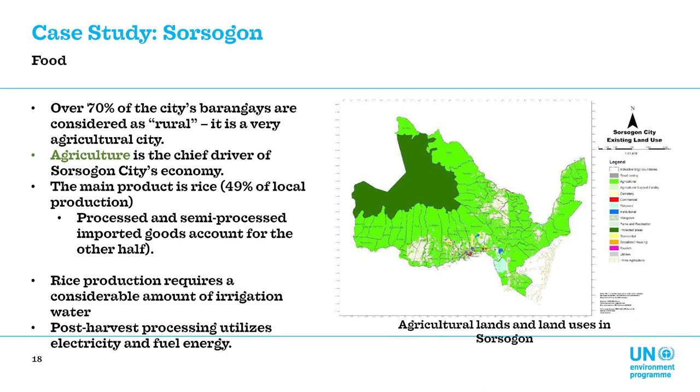The other resource flow we looked at was food. The vast majority of the city — over two-thirds — is agricultural land. Almost half of local production is rice, while processed and semi-processed imported goods make up the other half of inputs for the city. The nexus between water and food was pretty evident in terms of rice production, and post-harvest processing requirements for electricity and fuel energy are also related to water needs, since a lot of the city's electricity comes from hydroelectric power.